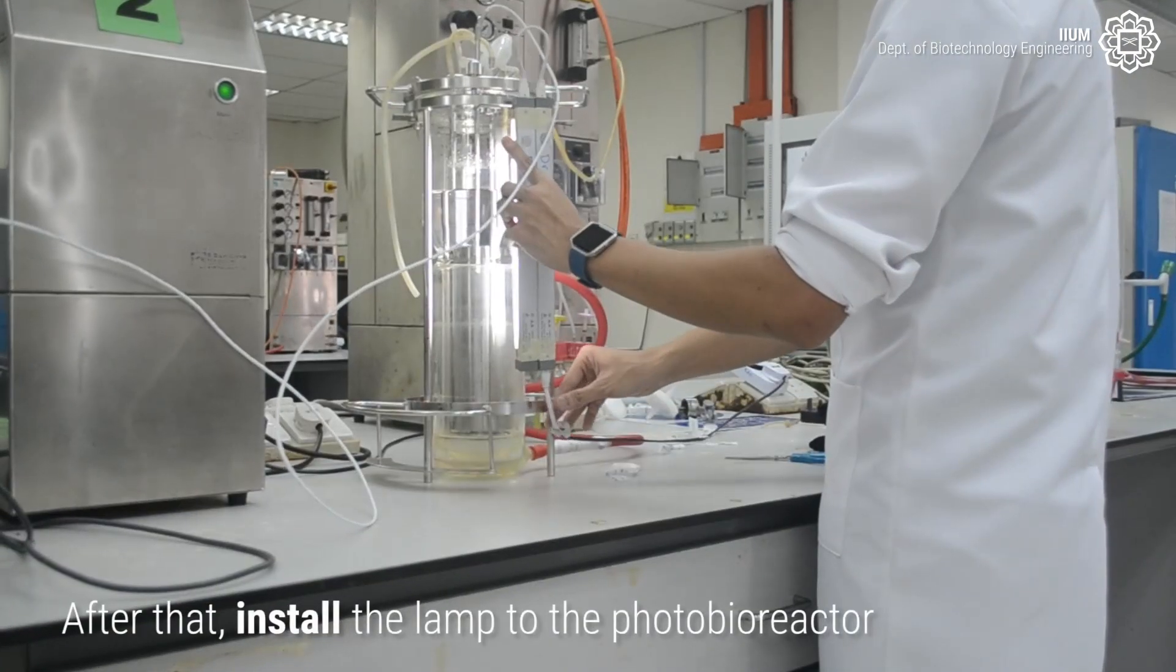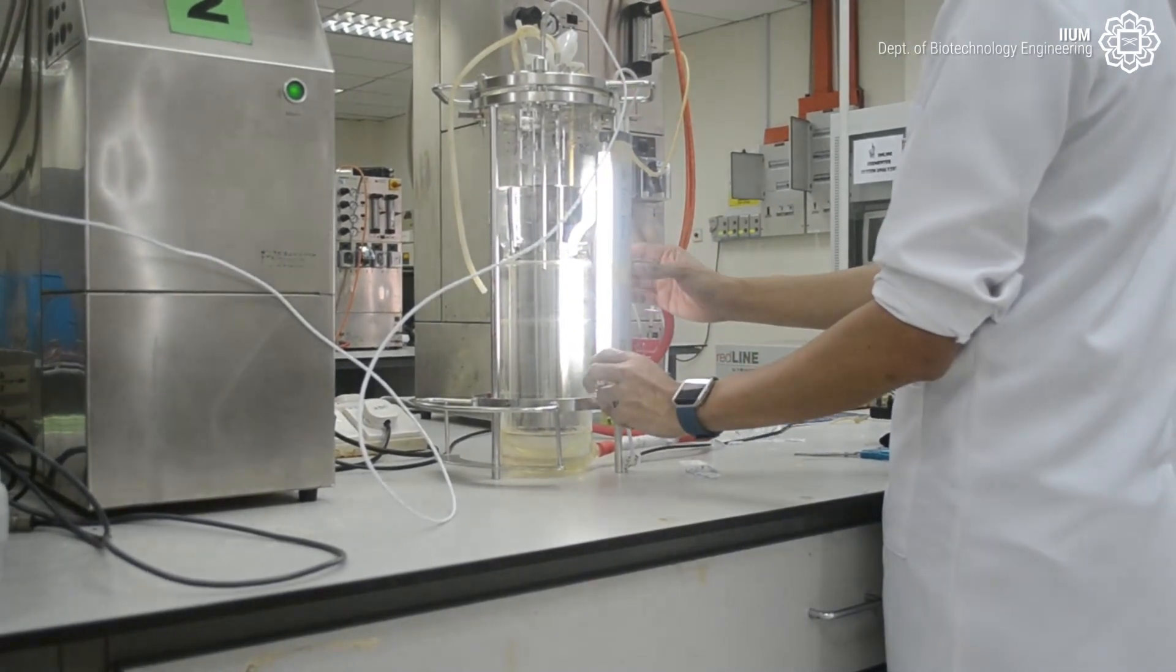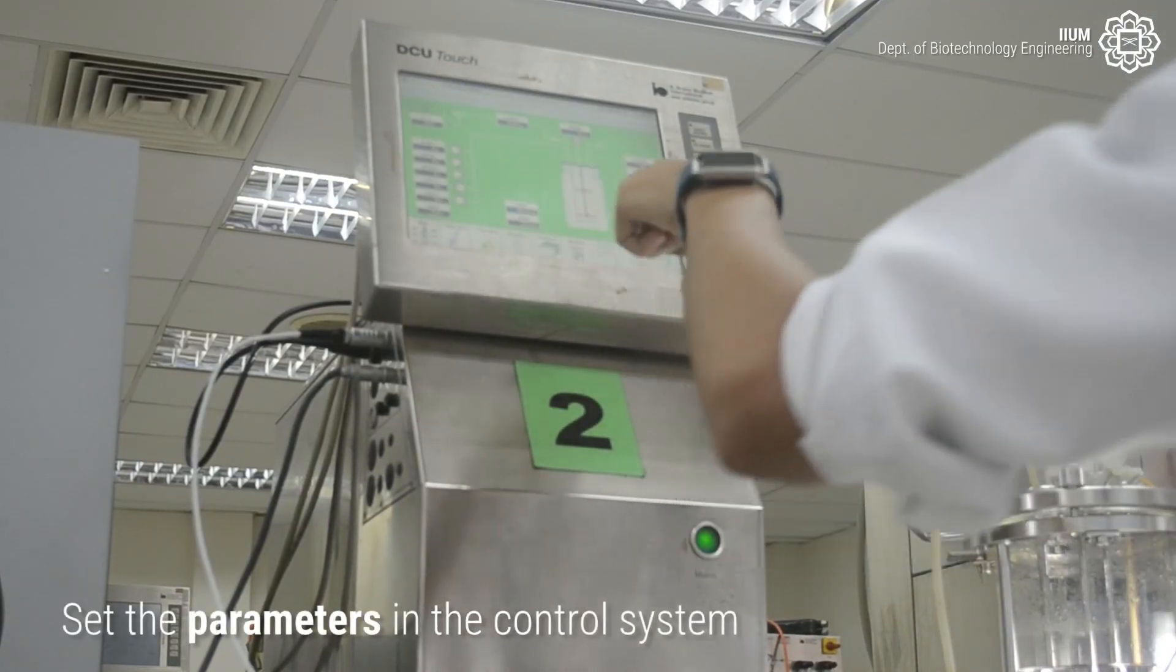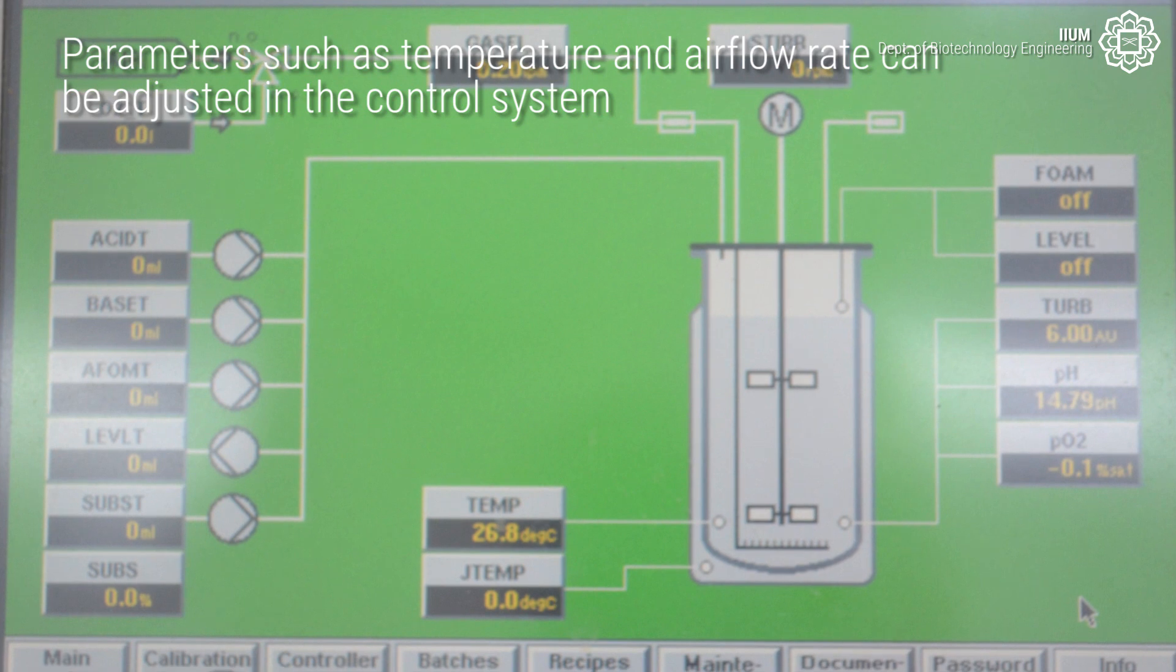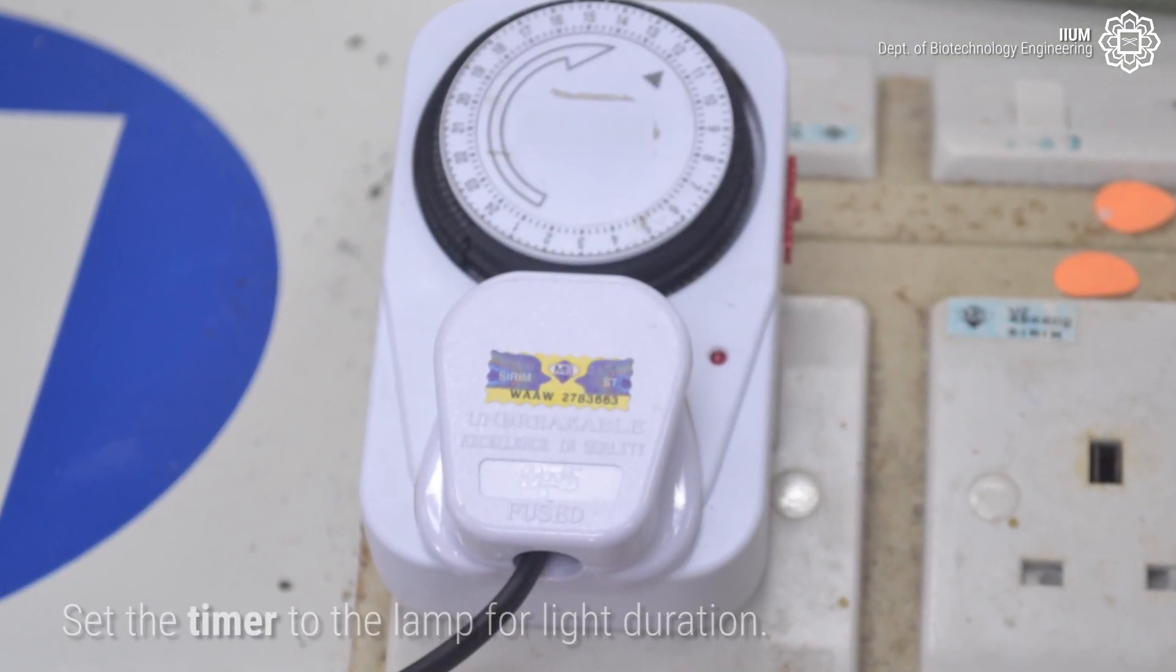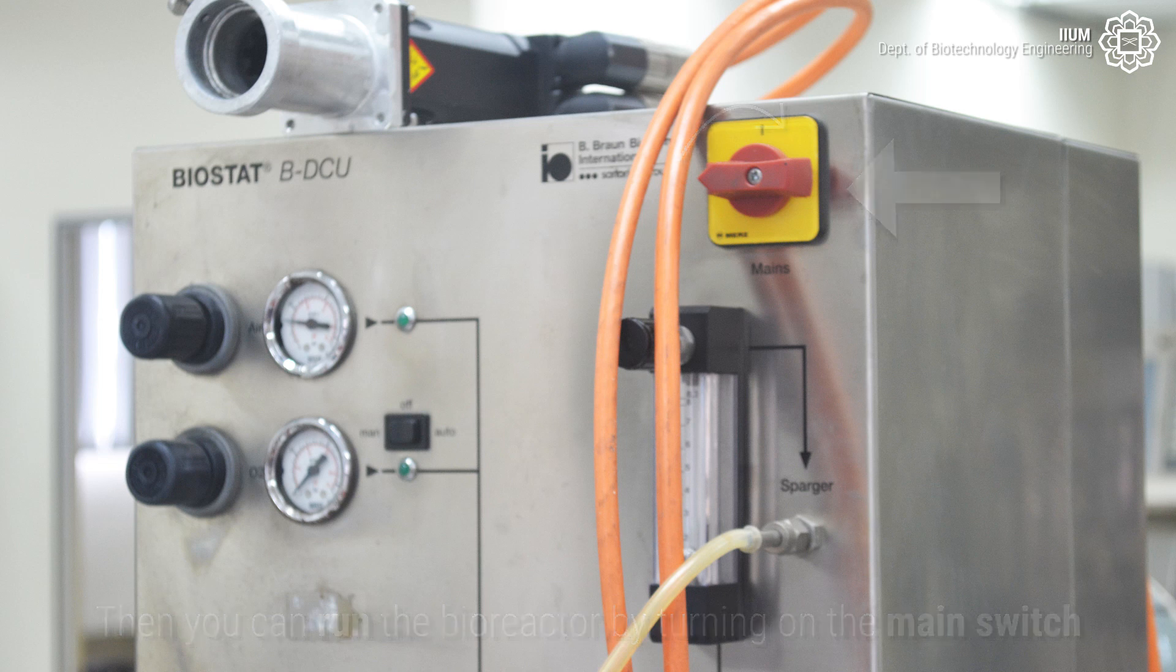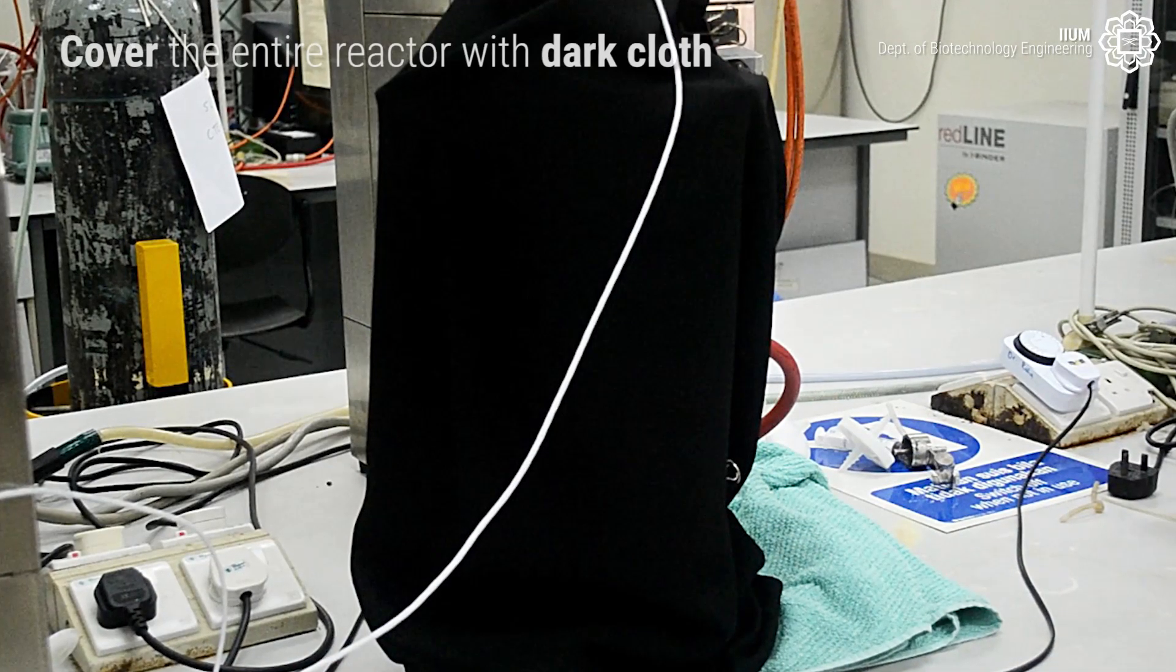After that, install the lamp to the photobioreactor. Set the parameters in the control system. Set the timer to the lamp for light duration. Then you can run the bioreactor by turning on the main switch. Cover the entire reactor with dark cloth.